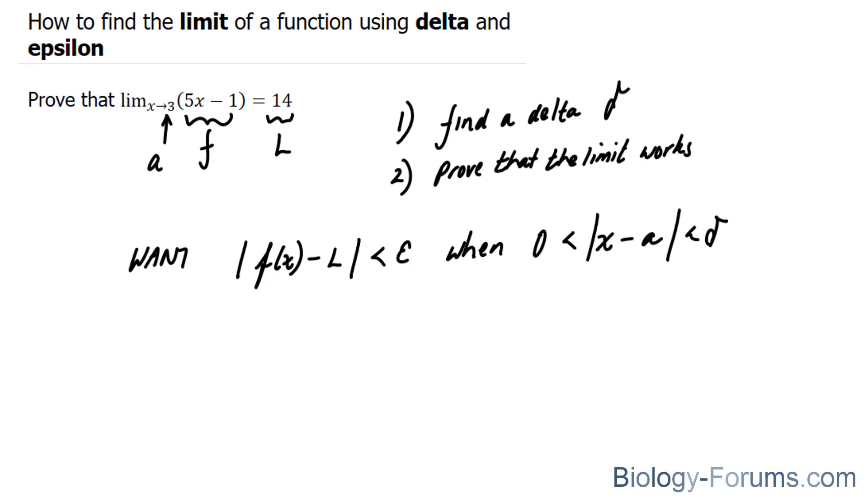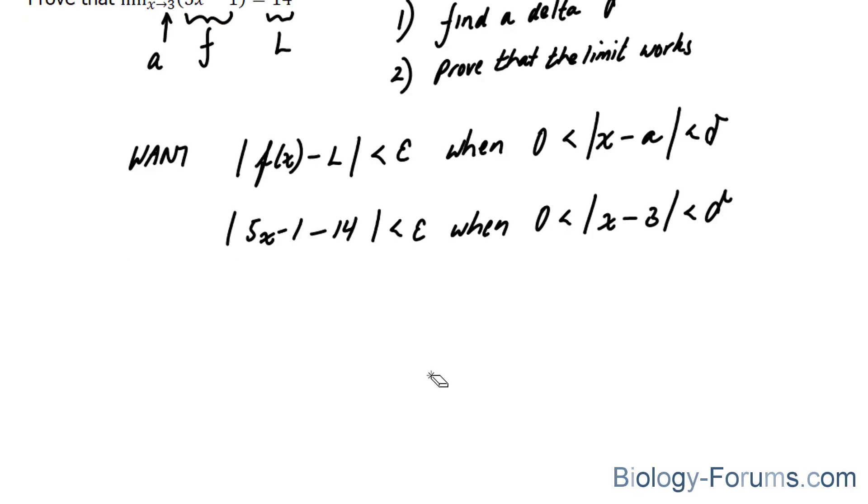So we're going to substitute the values of f, L, and a into this. Let's start over here: 5x minus 1 minus 14, because we're bringing this 14 over, less than epsilon when zero is less than the absolute value of x minus 3 less than delta.